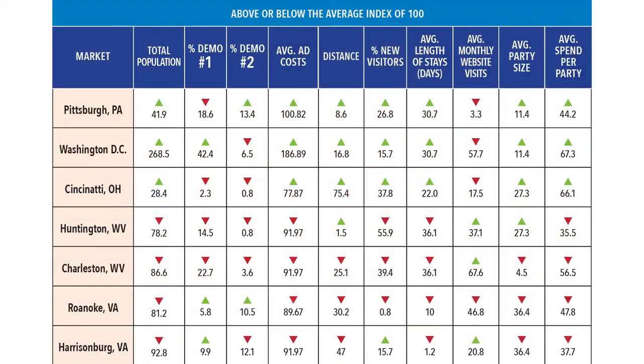What I like to do is create indexes, because an index tells you how each piece of information compares against the average. For example, Pittsburgh is 42% larger than the average market, whereas Roanoke is only 20% the size of the average market. By creating these index scores, we're able to understand how each of these markets compare to the average.